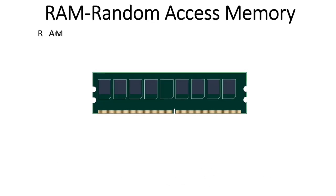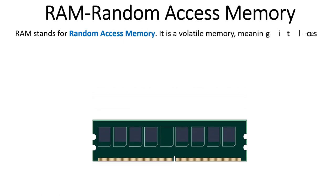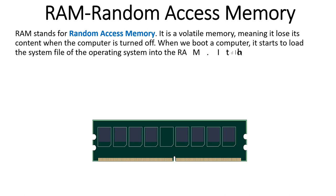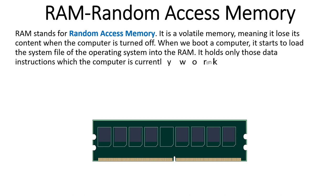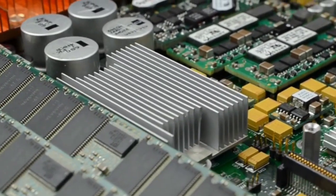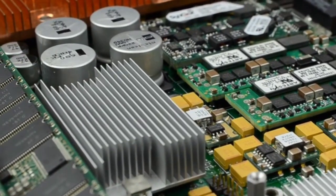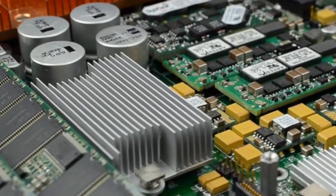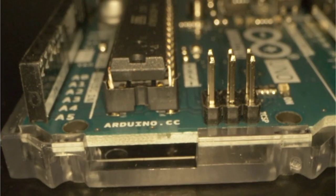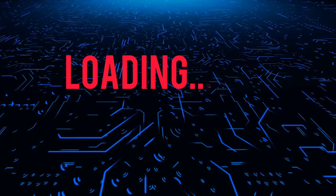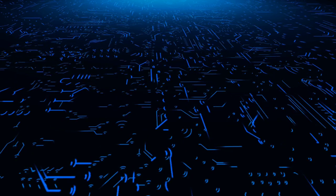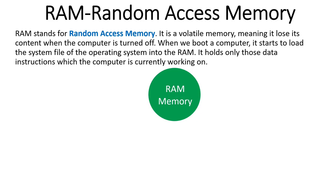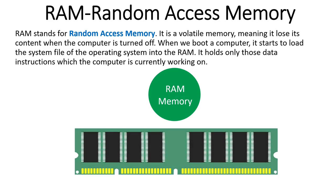RAM stands for Random Access Memory. It is the volatile memory of our computer system, meaning it will lose its data when we turn off the computer. It is also called temporary memory because it holds data on a temporary basis. Whatever data the CPU needs to access is stored in RAM. When we start our computer, it loads the operating system, and when we run any application, the data of that application is loaded into RAM.